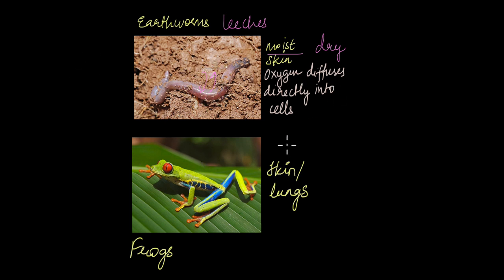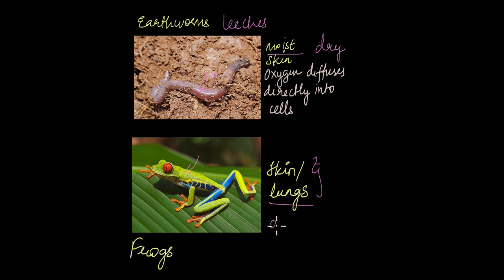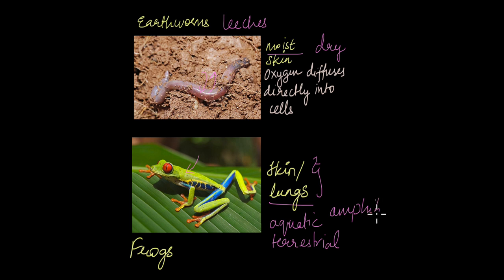Animals like frogs can also breathe through their skin, which is moist. But frogs also have lungs. This ability to breathe through both skin and lungs is what helps frogs survive underwater in aquatic conditions and in terrestrial or land conditions. This is a feature of almost all amphibians — they can survive in both land and water.